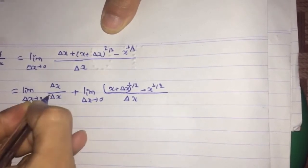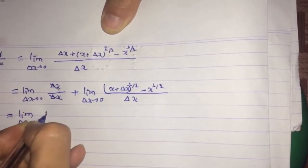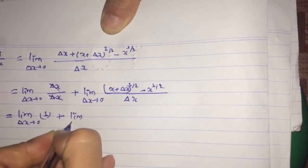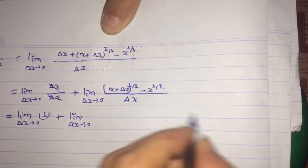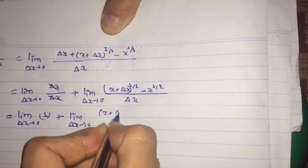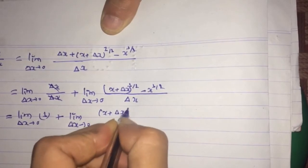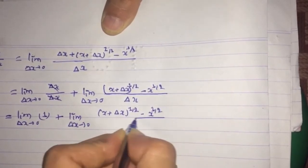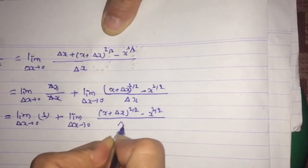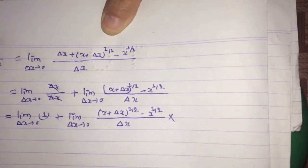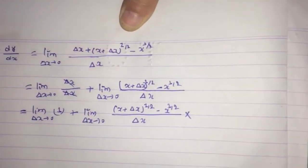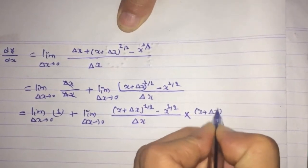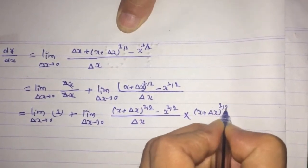The δx/δx cancels out and we are left with 1 plus limit as δx tends to 0. For the remaining term, we have to apply a trick for simplification: [(x + δx)^(1/2) minus x^(1/2)] divided by δx.